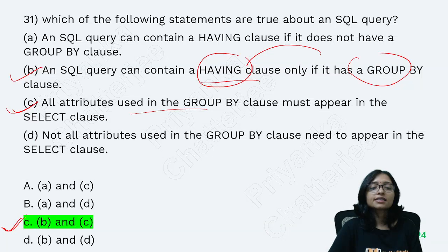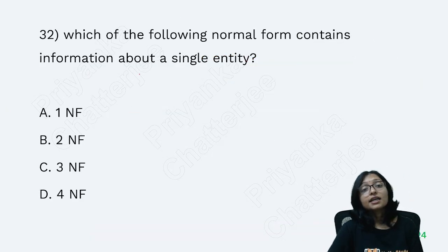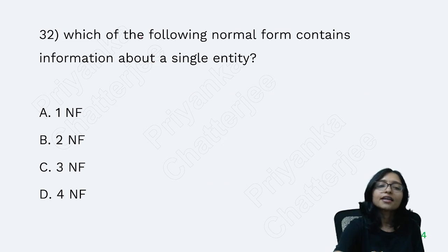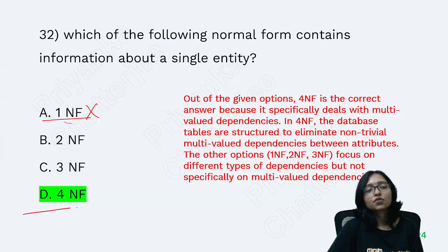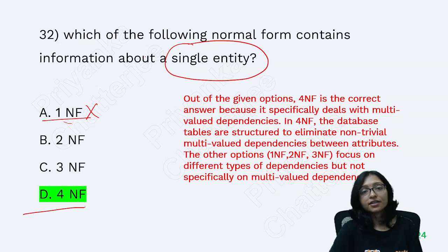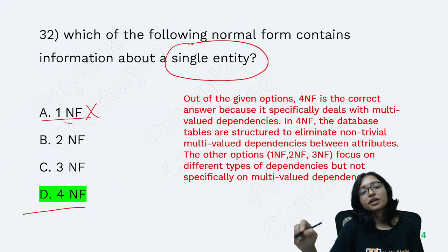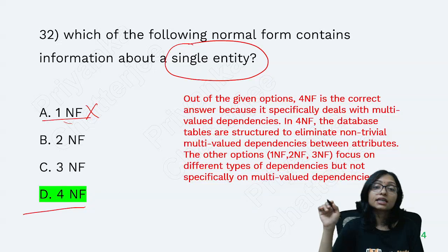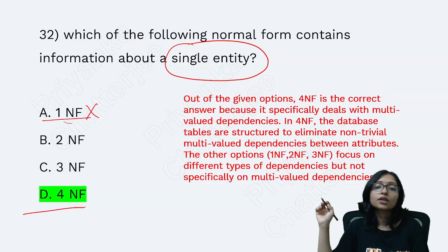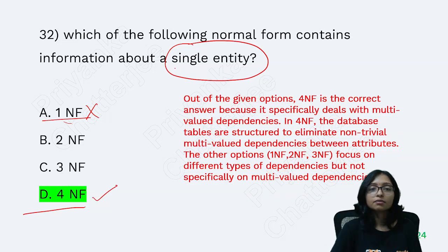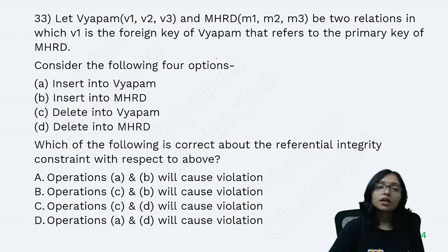Most of you will think the answer is 1NF, but the answer is 4NF. The question asks about a single entity, not a single value in a single cell — single value in a single cell is 1NF. 4NF means it is a single entity where multi-valued dependencies are removed. That is why the answer is 4NF — a very important question, must note it down.